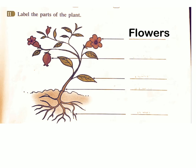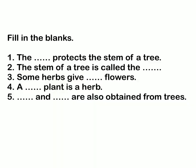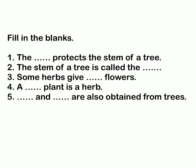Label the parts of the plant: flowers, fruit, leaf, stem, root. Fill in the blanks: 1. The dash protects the stem of a tree. Answer: bark. 2. The stem of a tree is called the dash. Answer: trunk. 3. Some herbs give dash flowers. Answer: beautiful. 4. A dash plant is a herb. Answer: banana. 5. Dash and dash are also obtained from trees. Answer: rubber and gum.